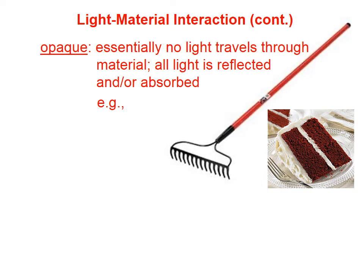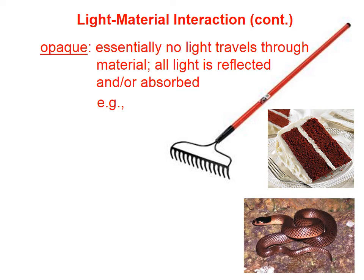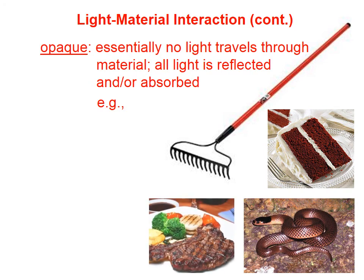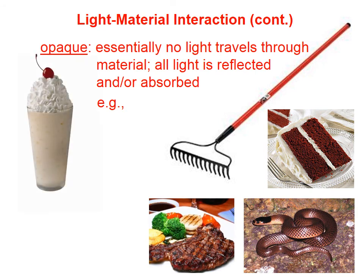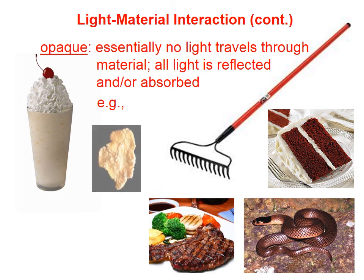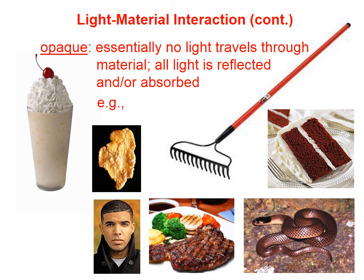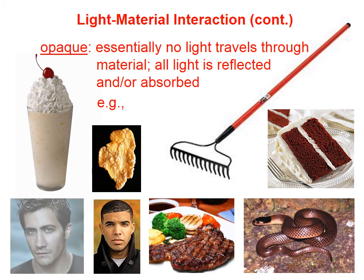Here are some examples of things that are opaque: cake, a rake, a snake, steak, a shake, a flake, Drake, and Jake — and many other things. Even things that don't rhyme with opaque are actually opaque.